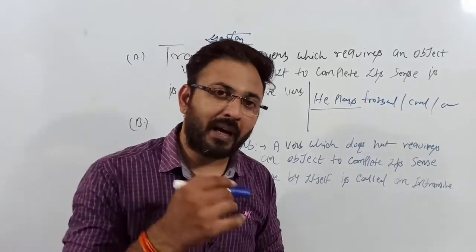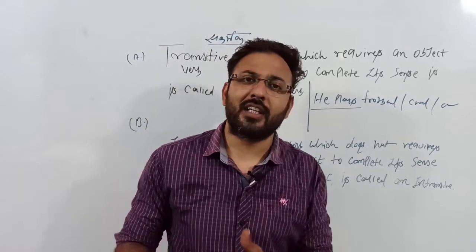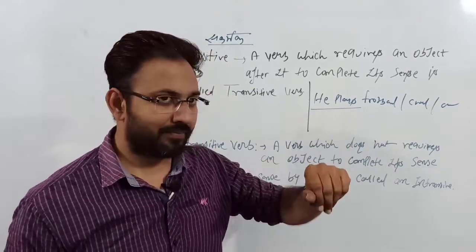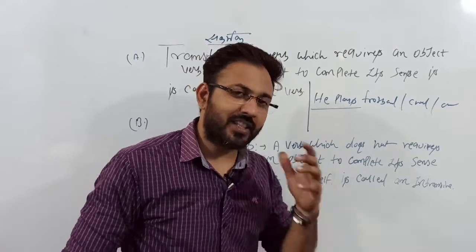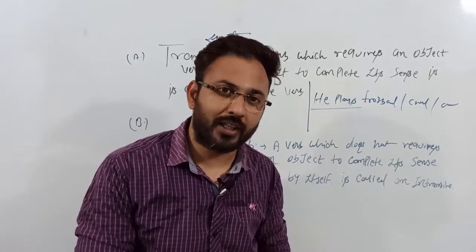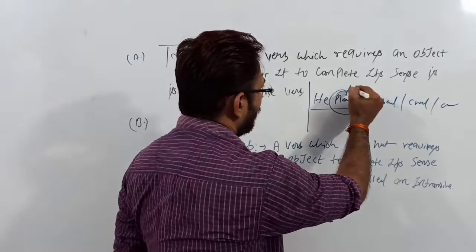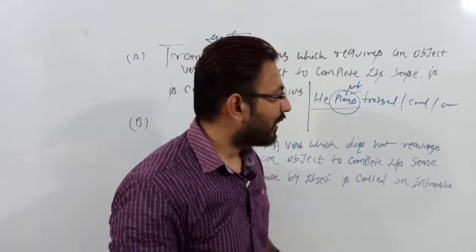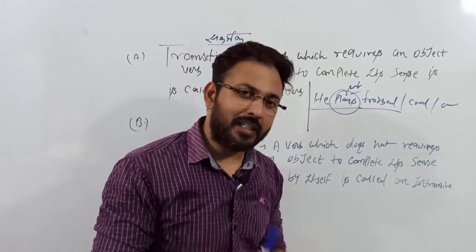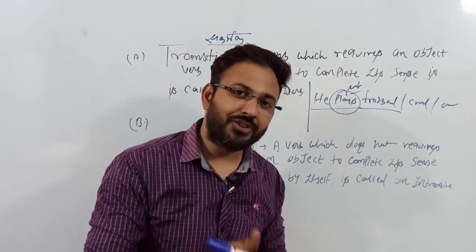Transitive means passing over — the action passes over from the subject to the object. So 'He plays football' or 'He plays cricket.' The simple trick is: ask 'What?' after the main verb. If you get an answer — like 'football' — then the verb is transitive. If the answer is found, the verb is transitive. If you don't get an answer, then it is intransitive.